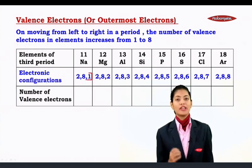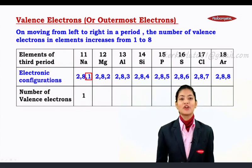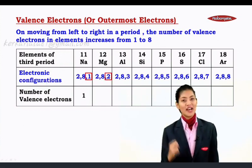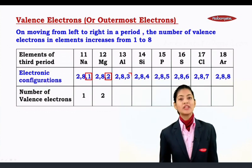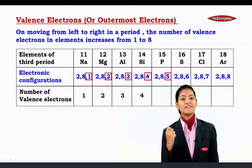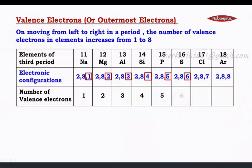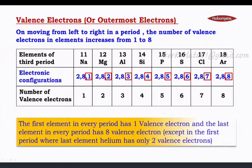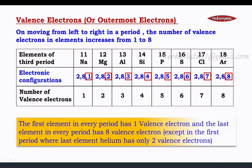Valence electrons means the electrons in the outermost shell. Sodium has one valence electron, magnesium has two, aluminium has three, silicon has four, phosphorus has five, sulfur has six, chlorine has seven, and argon has eight valence electrons. So the first element in every period has one valence electron and the last element has eight, except in the first period where helium has only two valence electrons.